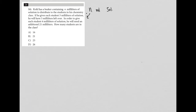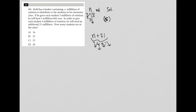So this N goes out in increments of three, but there are five left over — all the students get three and there's five left over. In order to give each student four milliliters of solution, he will need an additional 21 milliliters. So he would need whatever N was plus 21 so that each student would get four. How many students are in the class?